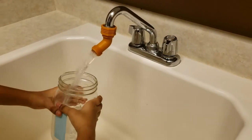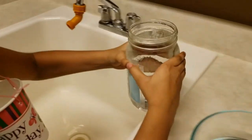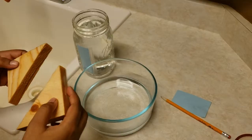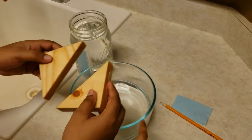Fill the bottle or jar with water. Now place the pieces of wood inside the bowl.